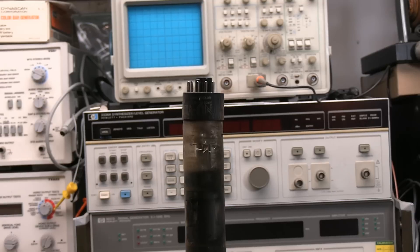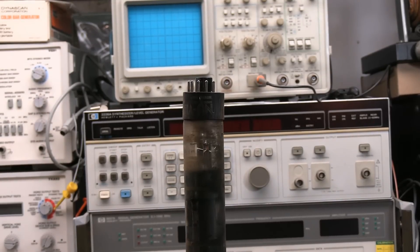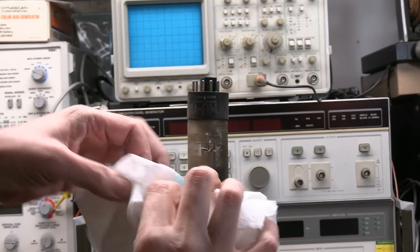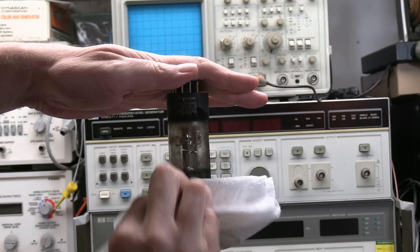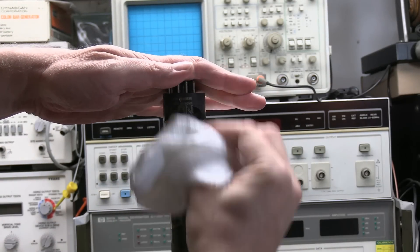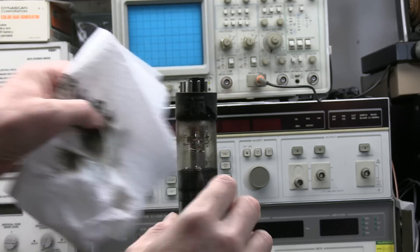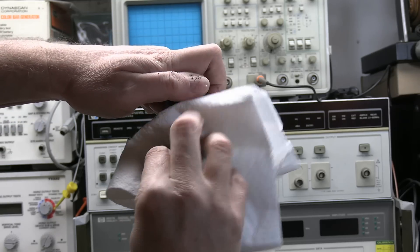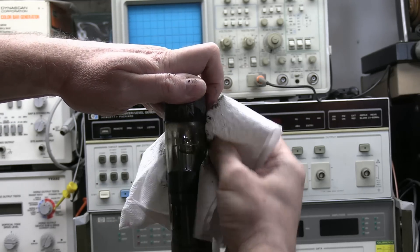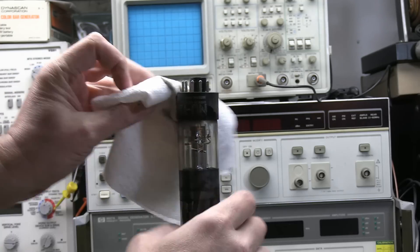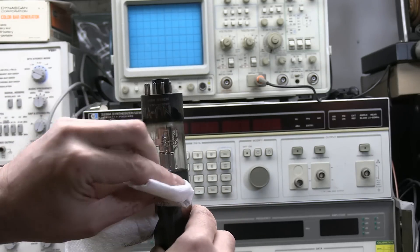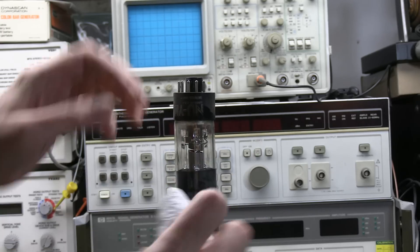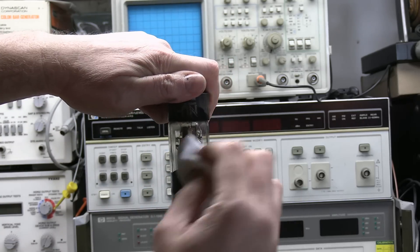I've warned many times over the years about using a picture tube rejuvenator. It wouldn't surprise me if that's what happened to this. If you're too aggressive with them, they blow the filament open and the ends can weld themselves to other elements inside the gun. It's pretty unusual for a picture tube filament to just burn out on its own. They're pretty robust, far more robust than your typical little miniature tube.